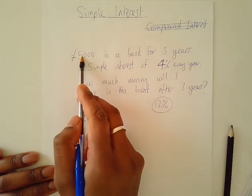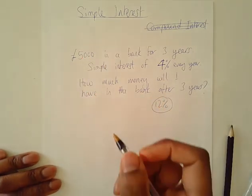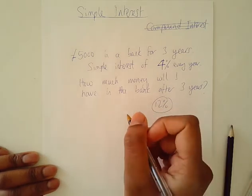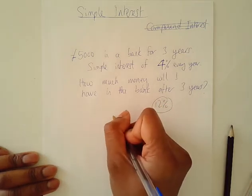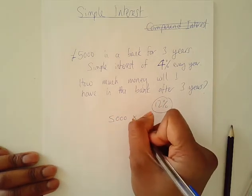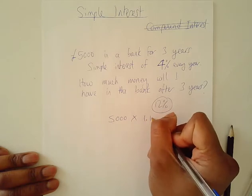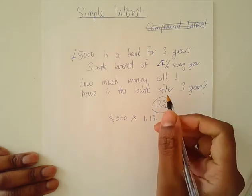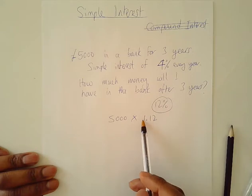So if I want to increase five thousand pounds by twelve percent, I could do that on the calculator. That would be five thousand multiplied by one point one two. If that was fifteen percent, that would be one point one five.